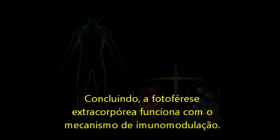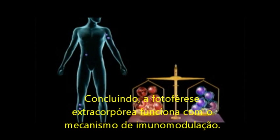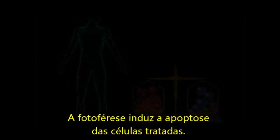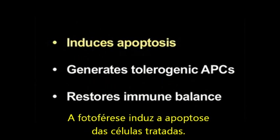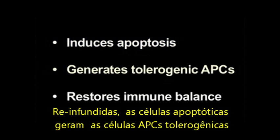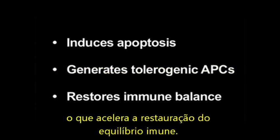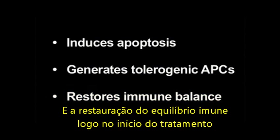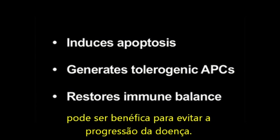In conclusion, extracorporeal photophoresis works via a mechanism of immune modulation. Photophoresis induces apoptosis of treated cells. Reinfused apoptotic cells generate tolerogenic antigen-presenting cells, which accelerates restoration of immune balance. And restoration of immune balance early in the treatment regimen may be beneficial in preventing the progression of disease.